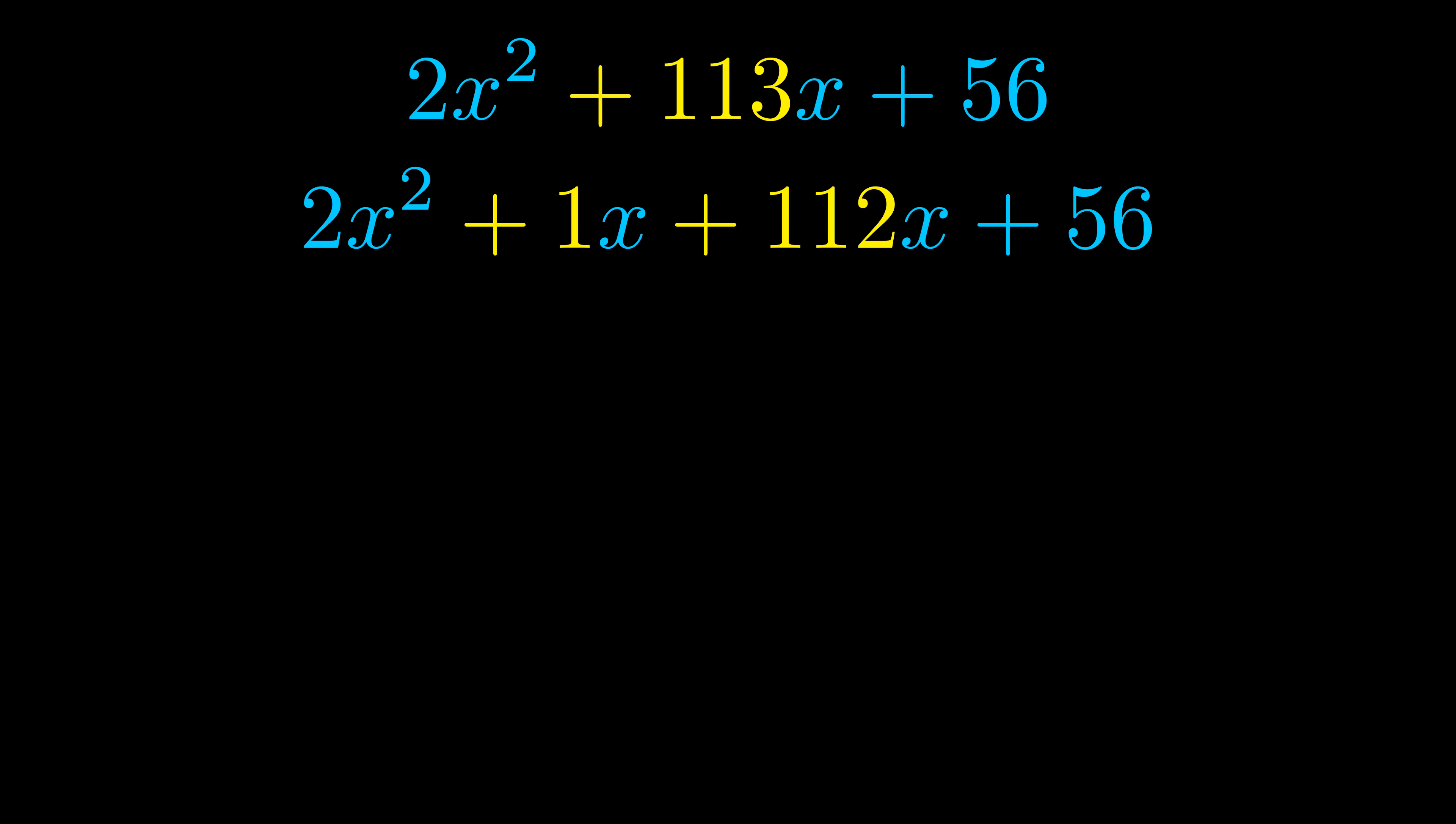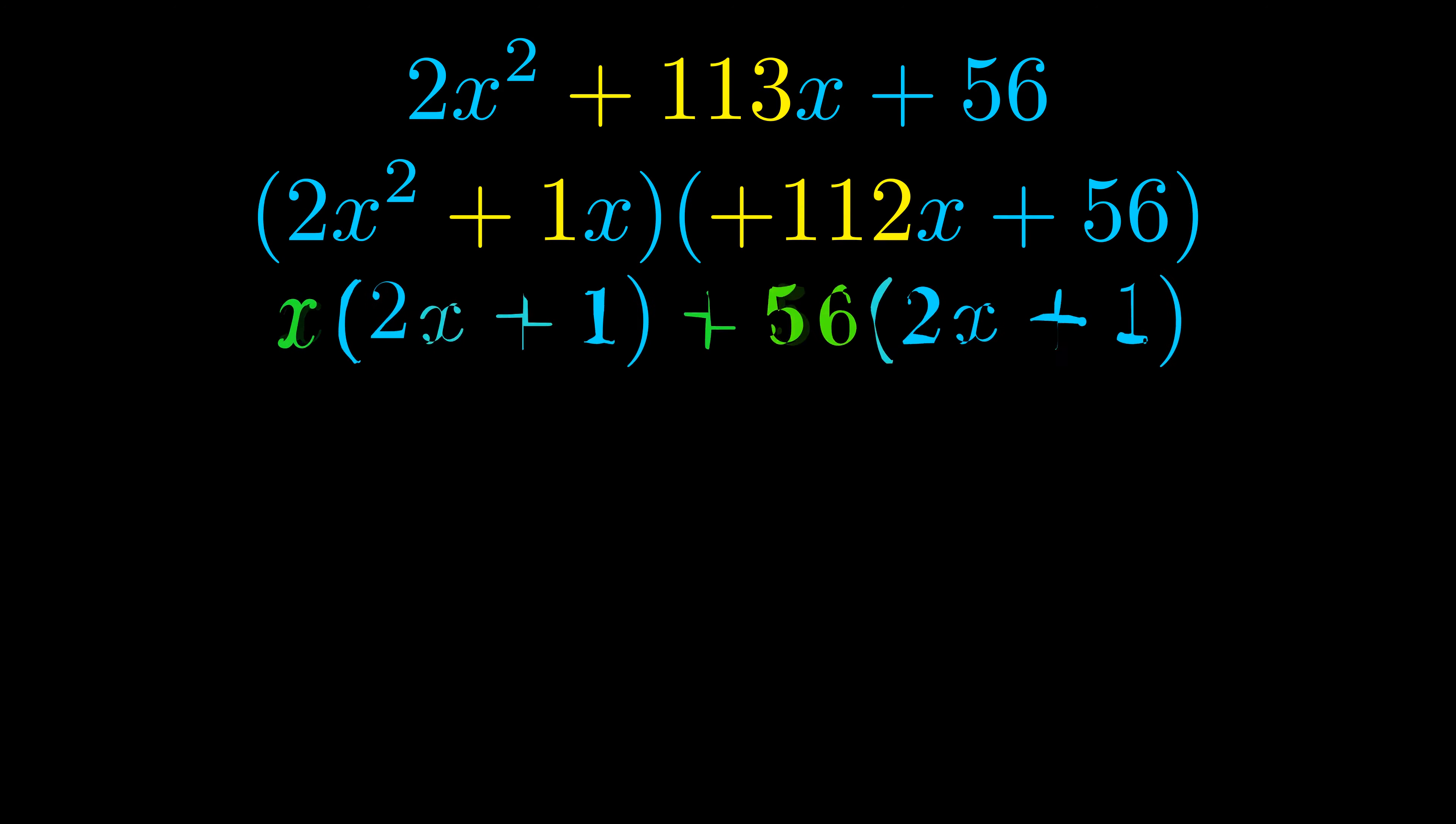Once we've done this, we go ahead and we put parentheses around the first term and the last term. And we do that so that we can take the greatest common factor out of both terms. We can see the greatest common factor is now outside in green.